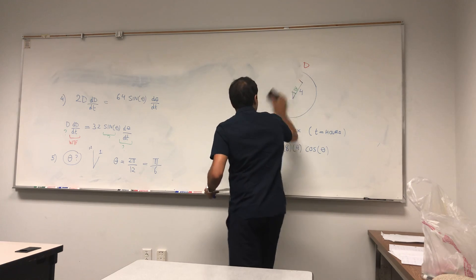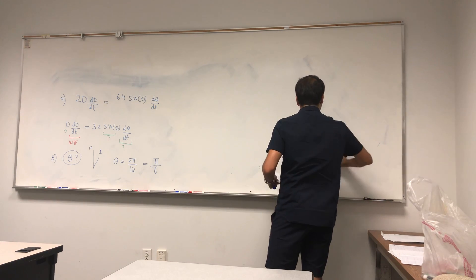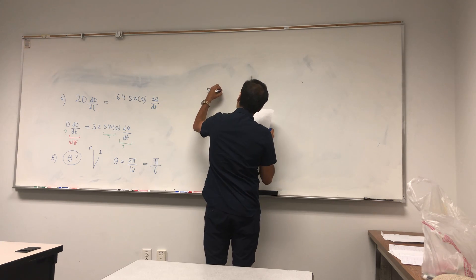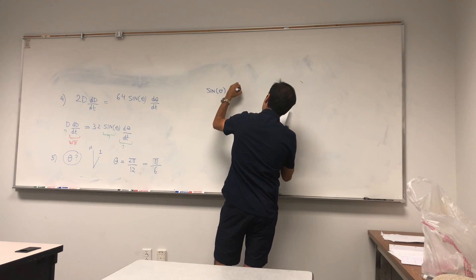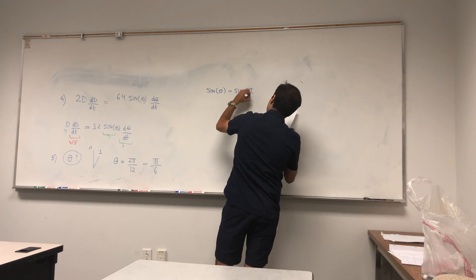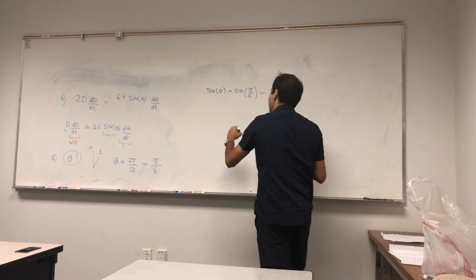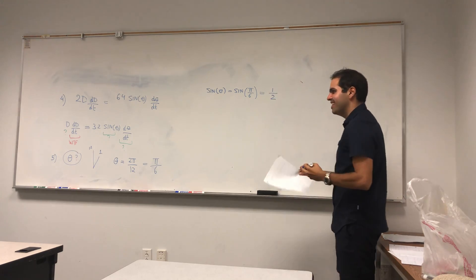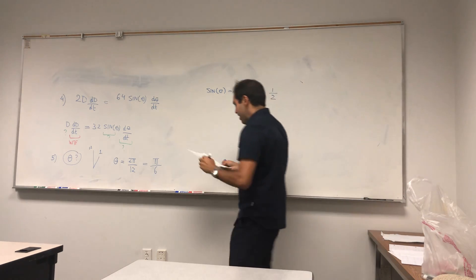And once we have pi over 6, we can determine sine. So sine of theta is then sine of pi over 6, so sine of 30 degrees, it's cosine of 60 degrees, and that's a nice one, that's 1 half. Great.